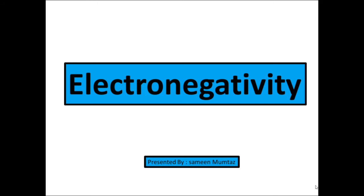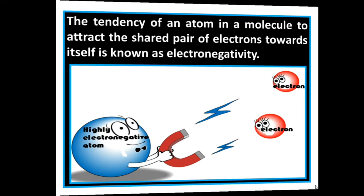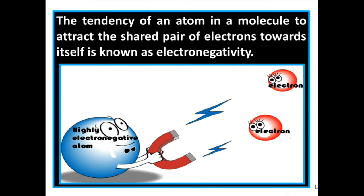Electronegativity. I am your chemistry teacher Samir Namtas. The ability of an atom to attract a shared pair of electrons towards itself in a chemical bond. Look at the diagram. The tendency of an atom in a molecule to attract the shared pair of electrons towards itself is known as electronegativity.